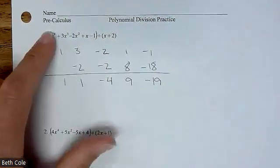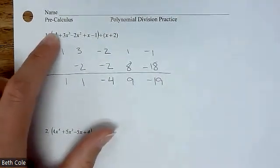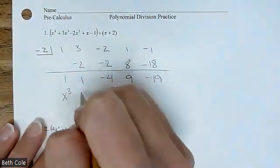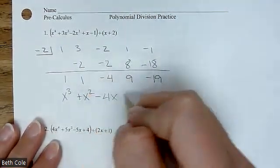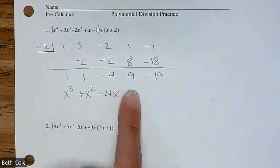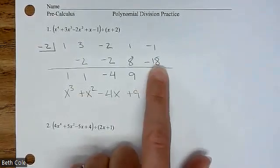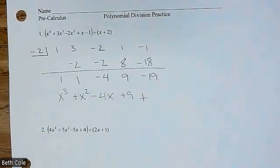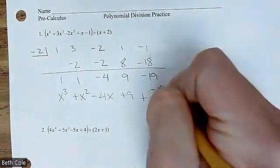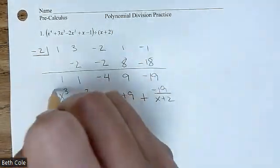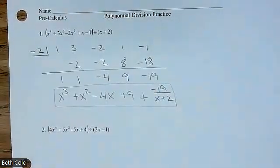Now, how do you write your answer? Because we divided, we put one less x. So instead of x to the fourth, you're going to start with x to the third: x³ + x² − 4x + 9. That part is called the quotient. This part is called the remainder. My suggestion is always put plus — I've learned over the years that goes better. And then you take that number and put it over your divisor, x + 2. What you're basically saying is we were unable to divide that part out.